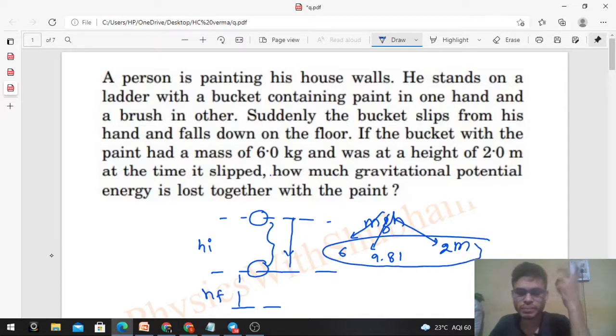And this decrease in gravitational potential energy will appear as the kinetic energy, because mechanical energy of the system will remain conserved. So the decrease in potential energy will appear as the increase in kinetic energy.